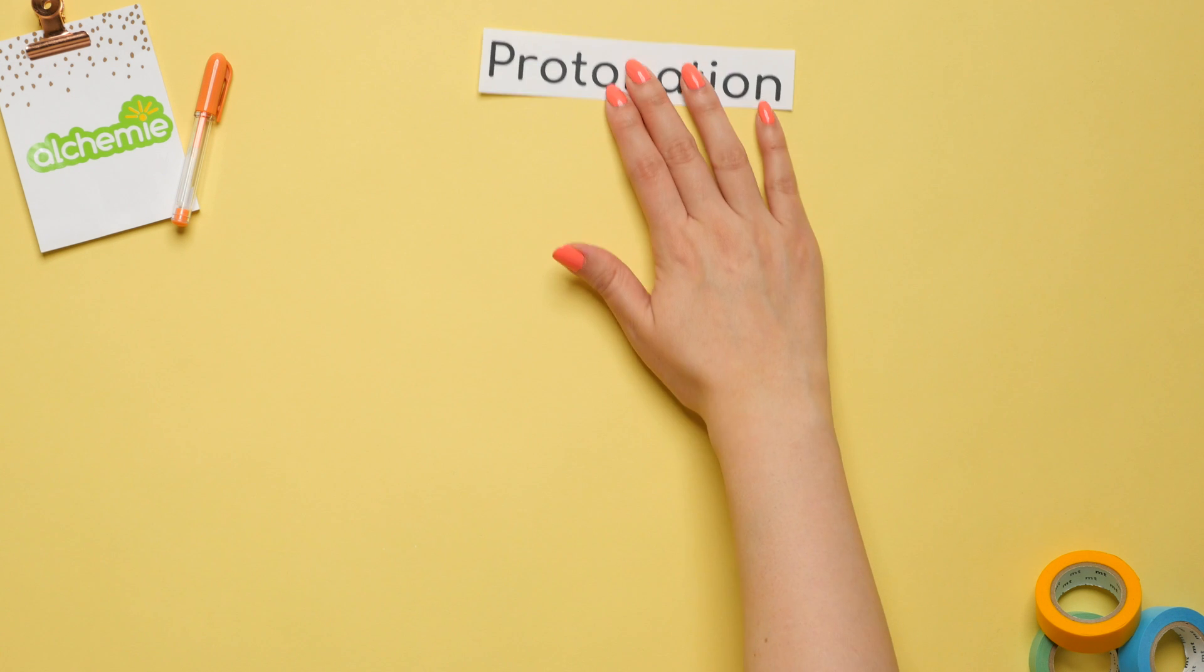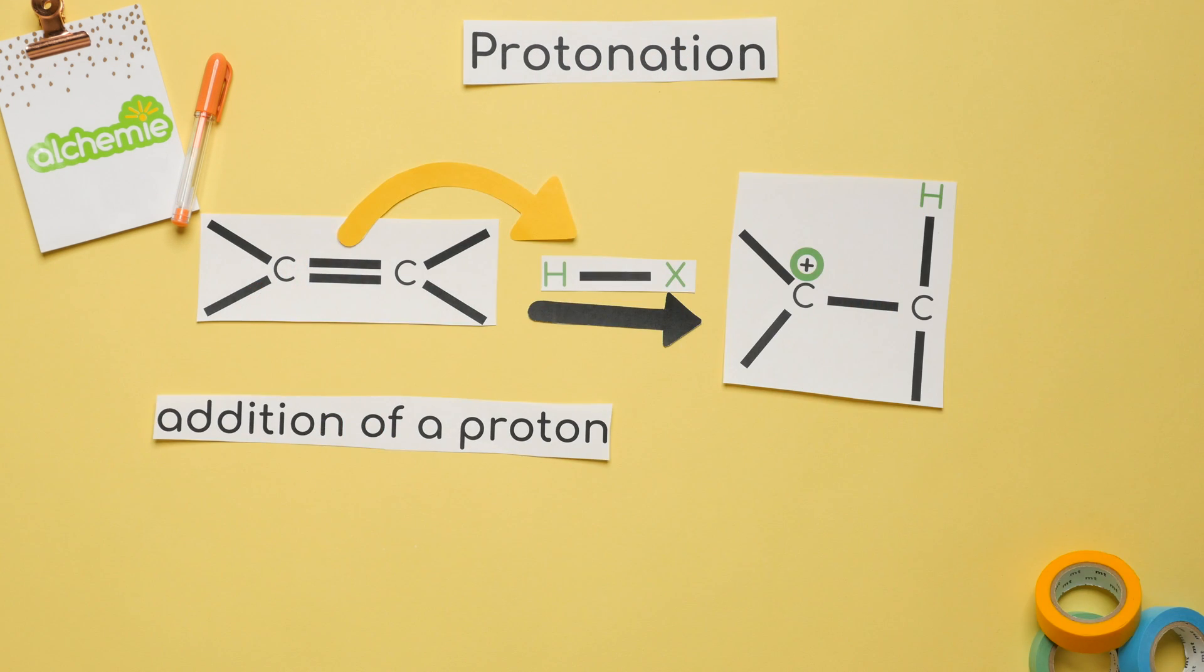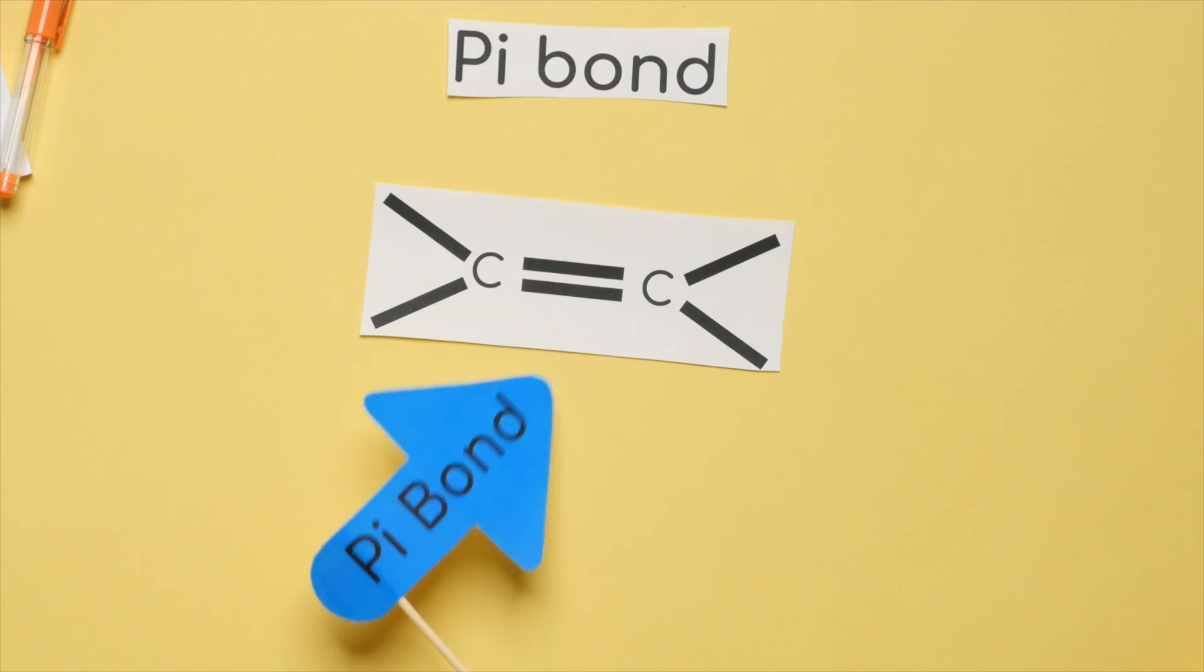Protonation is the addition of a proton. A proton refers to H+, and a pi bond simply refers to a double bond.